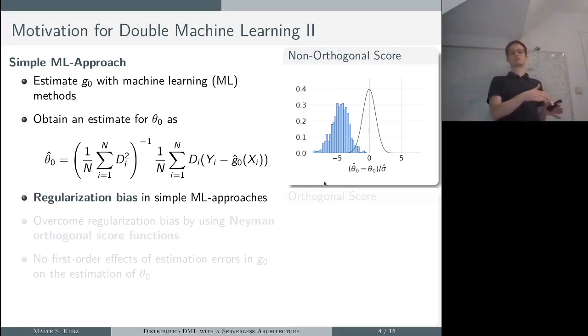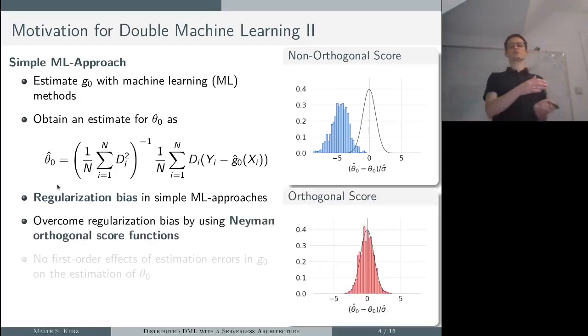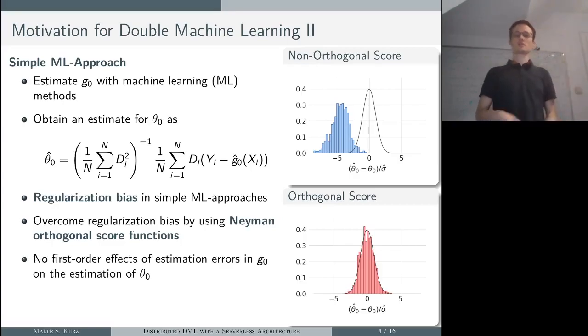Why regularization bias? The reason for this bias is that to estimate g with machine learning methods we have to heavily regularize because x is high dimensional, and the bias or the error we make in estimating g then translates to a bias in the estimation of theta. To overcome this regularization bias, the double machine learning framework relies on the so-called Neyman orthogonal score functions. If we use them to estimate our theta, we no longer have first order effects of those estimation errors in g on the estimation of theta. On the bottom right, with an orthogonal score, our theta estimates are no longer biased.